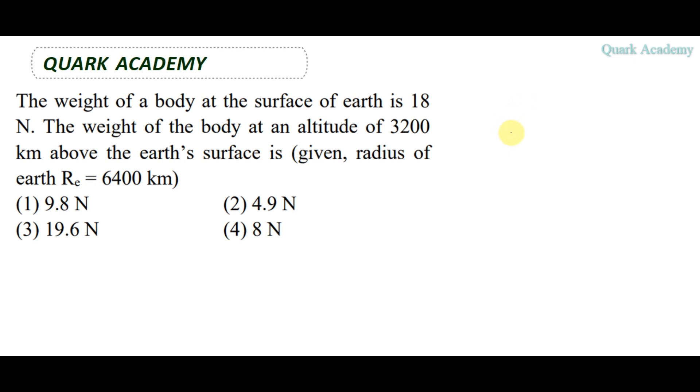Weight of a body at the surface of earth is 18 newton. This is Earth-M, Earth-M is capital M, Earth-R is R. In the surface of an object, it has mass m. The weight is gravitational force between Earth and the object. So, G M m by R square.